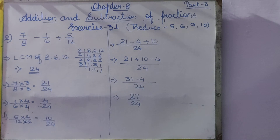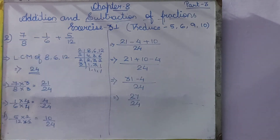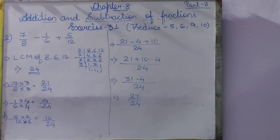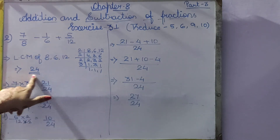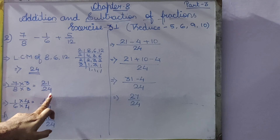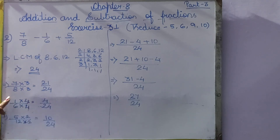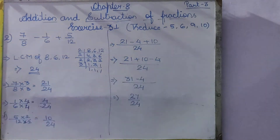Question number 2: 7 by 8 minus 1 by 6 minus 5 by 12. All 3 denominators are different. So we take out the LCM of 8, 6, and 12, and we get 24. We make the common denominator: 7 by 8 becomes 21 by 24; 1 by 6 becomes 4 by 24; 5 by 12 becomes 10 by 24. So we have got the same denominator as 24.